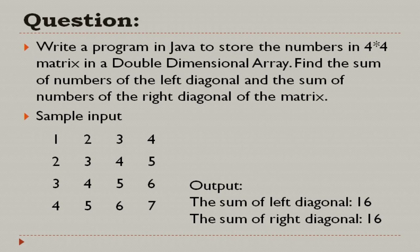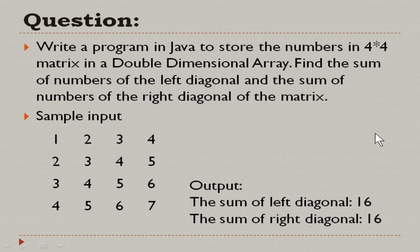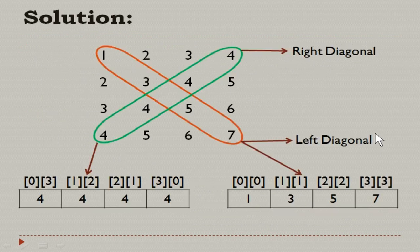You can see a sample input here where you have 4 rows and 4 columns, which are 16 elements. The output should be the sum of the left diagonal and then the sum of the right diagonal. We will be seeing which is the left diagonal and the right diagonal in the solution slide.